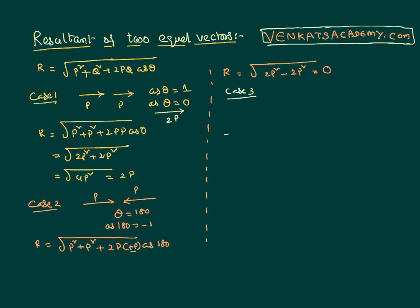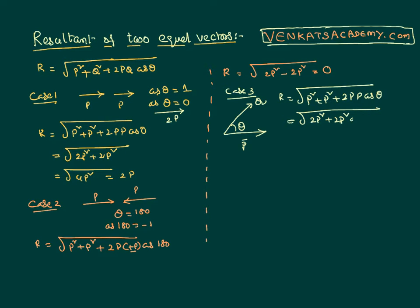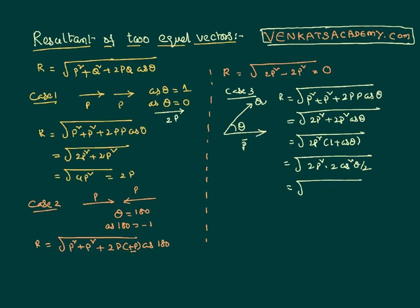So two equal vectors in the same direction give double the resultant, while two equal vectors in the opposite direction give a zero resultant. Now let us consider another case: the same equal vectors p and q (both equal in magnitude), but with an angular separation θ between them in the same general direction. The resultant formula gives the square root of 2p squared plus 2p squared cosθ. Using the trigonometric identity 1 + cosθ = 2cos²(θ/2), the answer simplifies to 2p·cos(θ/2).